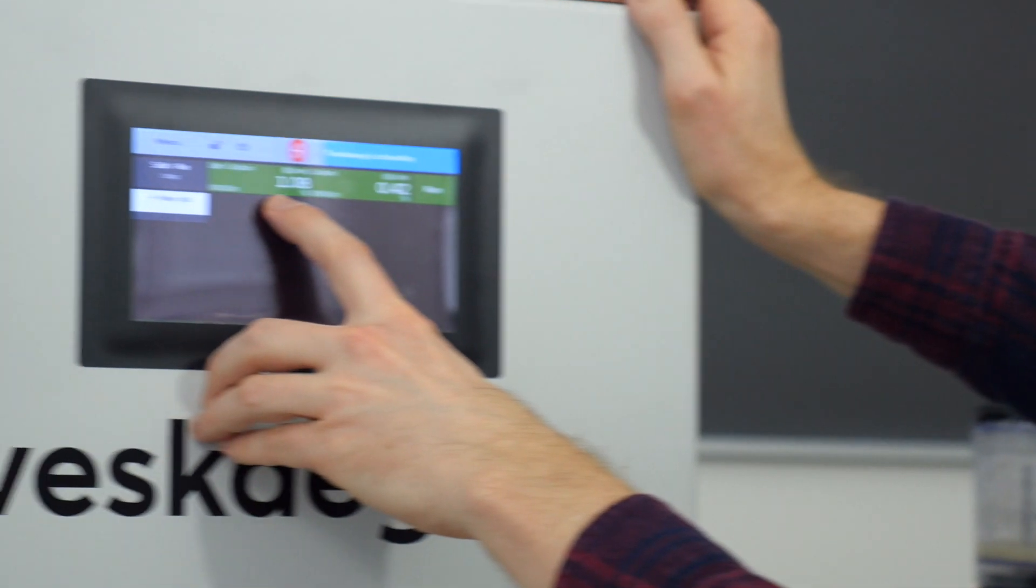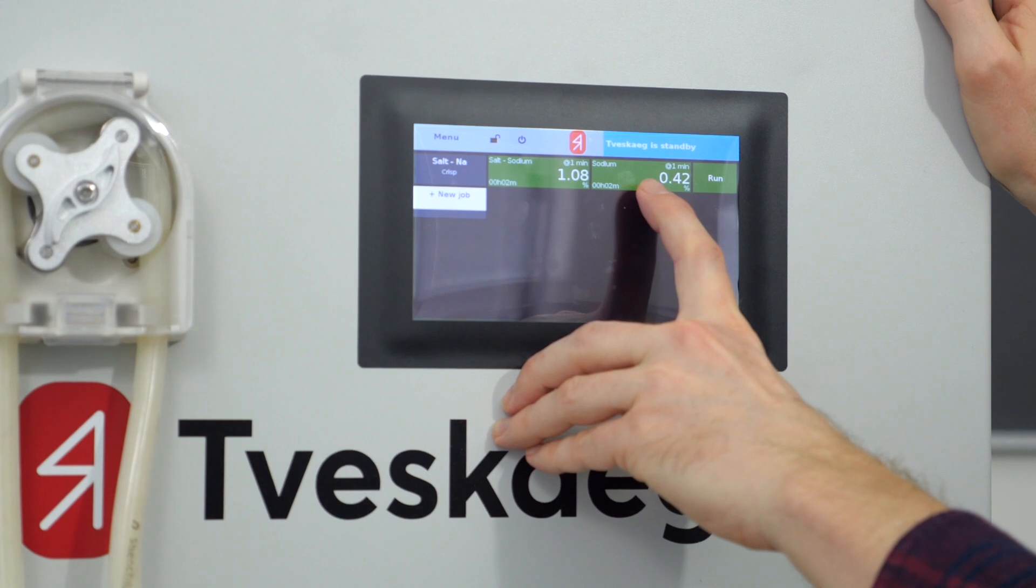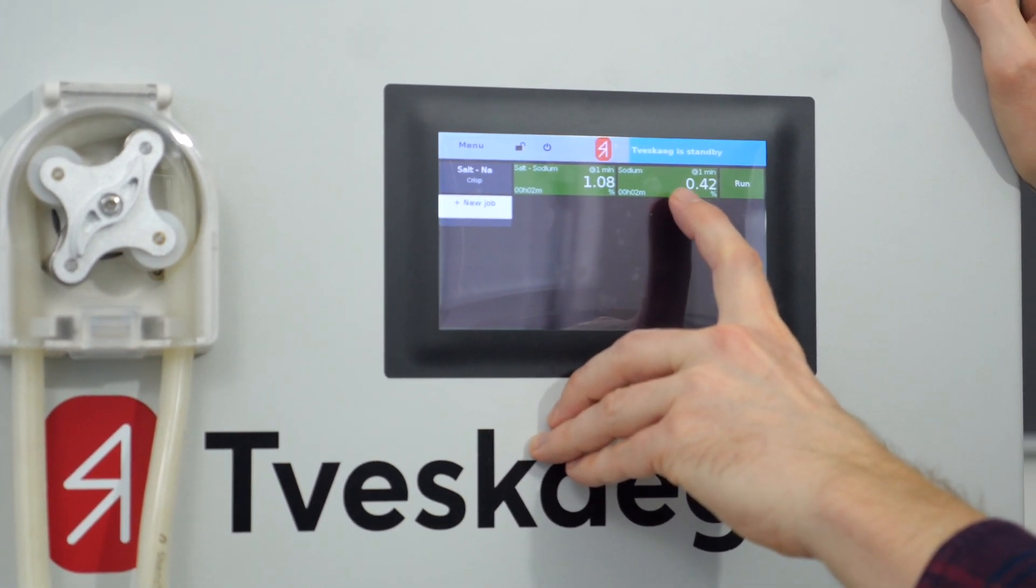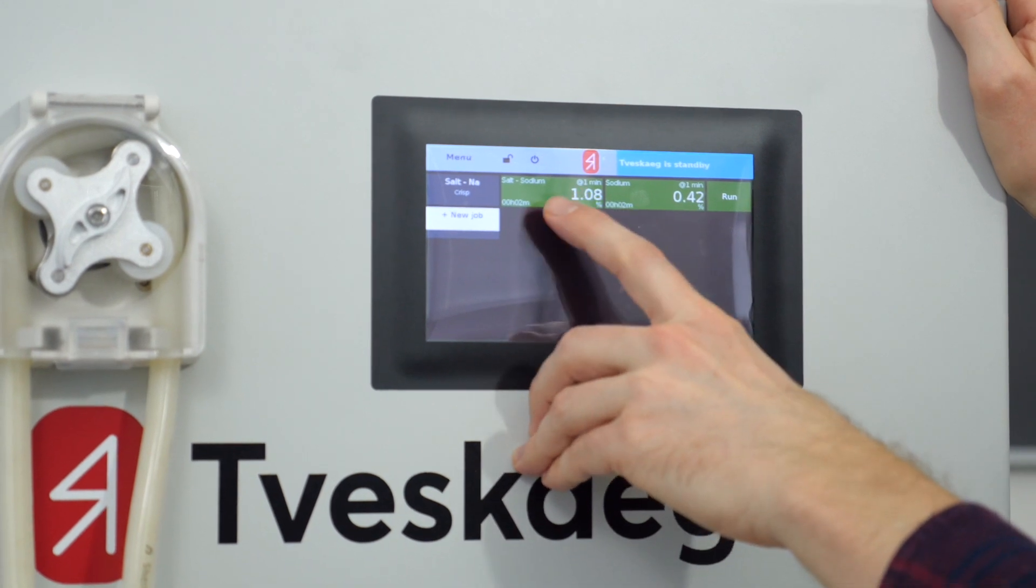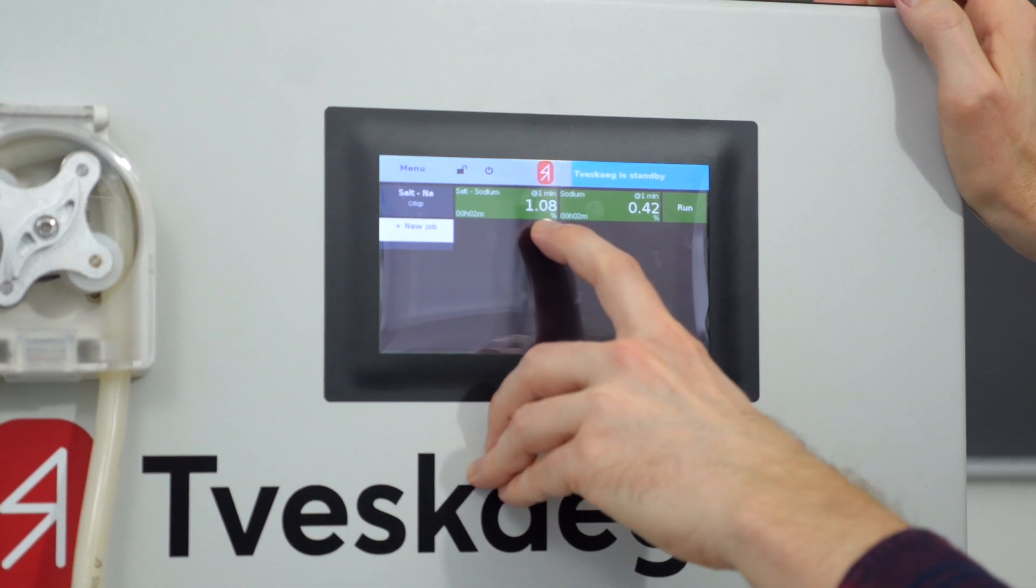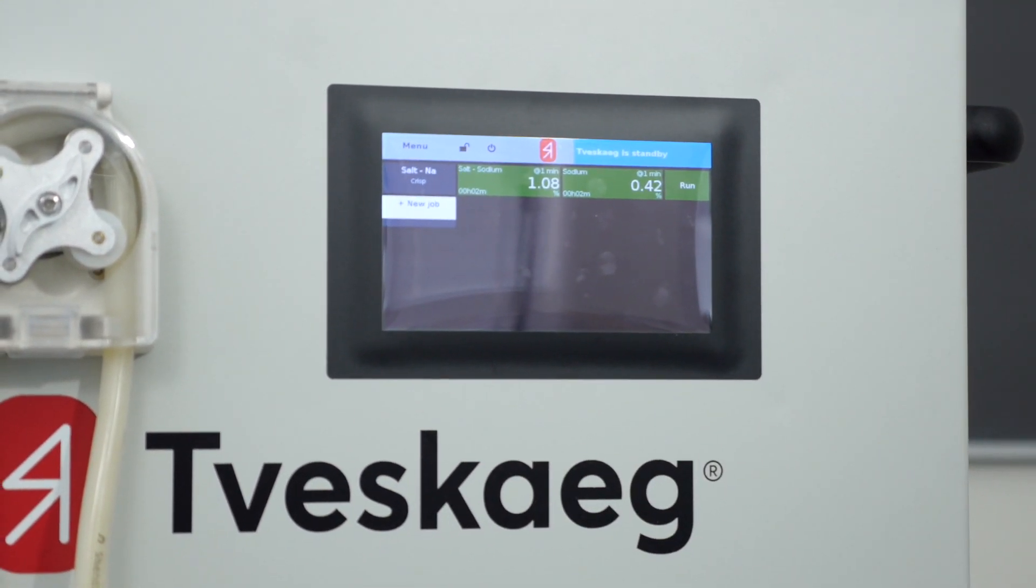And if you calculate that towards what the salt content is, the system internally multiplies with 2.54, which is the factor between both. So if you want to transfer or calculate salt from sodium, you have to times with 2.54. So you end up at 1.08% of salt content in these crisps here.